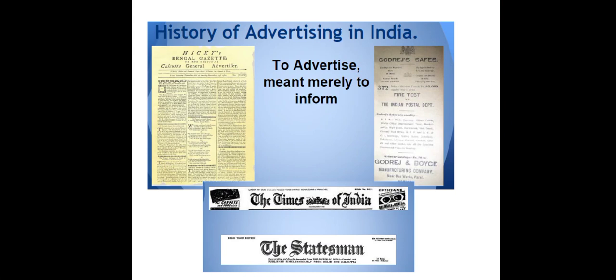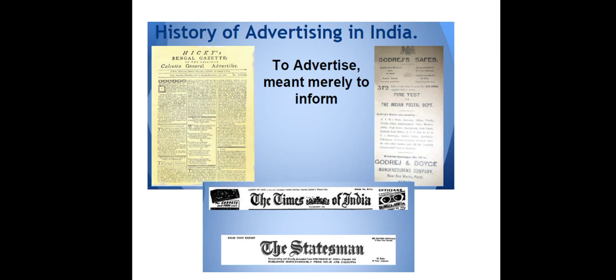If you look at the history of advertising in India, earlier newspapers had glimpses of content and it was more written. It was more just a written format. The main objective here was to inform — information was the main idea behind advertising, and it was only through words that messages used to be sent.